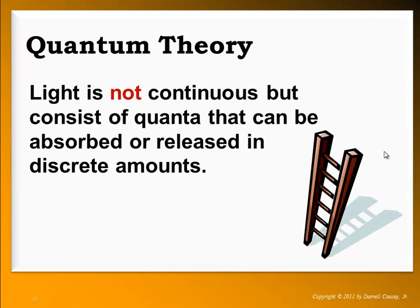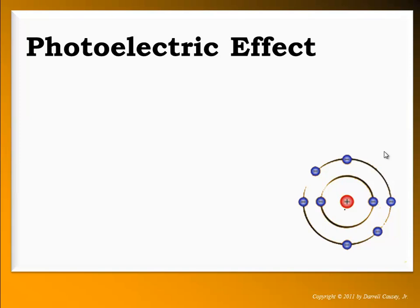Quantum theory states that light is not continuous, but consists of quantum that can be absorbed or released in discrete amounts. The photoelectric effect was one of those things that was not easily explained by light being a wave.